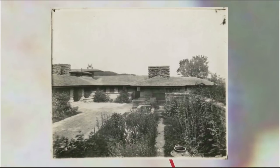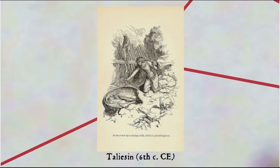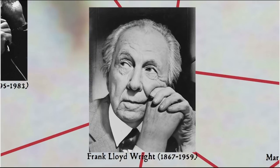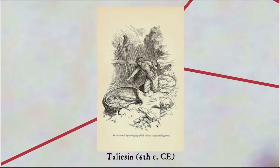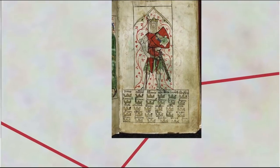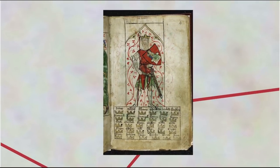Wright would eventually repair his beloved Taliesin and live there for the rest of his life. Wright named his dream house Taliesin after the semi-legendary early medieval Brythonic poet because of his Welsh heritage on his mother's side. He had changed his middle name from Lincoln to Lloyd in honour of the Lloyd-Jones family after his parents had separated when he was 14, and he never saw his father again. The poet Taliesin, whose name means 'shining brow,' was said to have lived sometime in the 6th century, and has been connected to various legendary kings, including King Arthur.